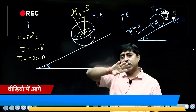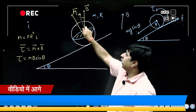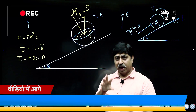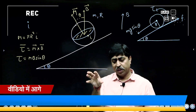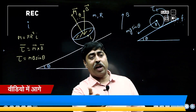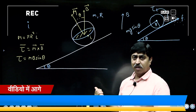The magnetic torque always has a tendency to bring vector m parallel to B. Magnetic torque ka direction hamesha aisa hota hai ki vector m ko ghuma ke B ki taraf le jata hai.